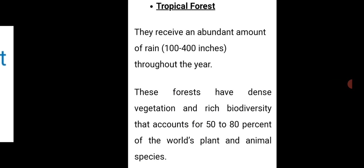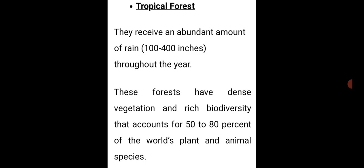Further classification of forest ecosystems includes tropical forests, which receive abundant rainfall throughout the year and have dense vegetation and rich biodiversity accounting for 50 to 80% of the world's plant and animal species. There are tropical evergreen forests and tropical deciduous forests. Deciduous forests have shrubs and dense bushes with a large selection of trees, found in large parts of the world with a wide variety of fauna and flora.